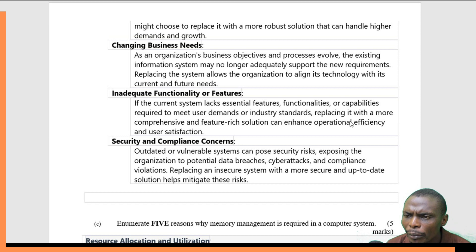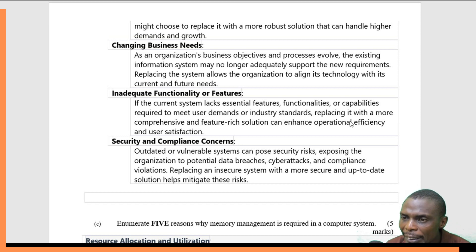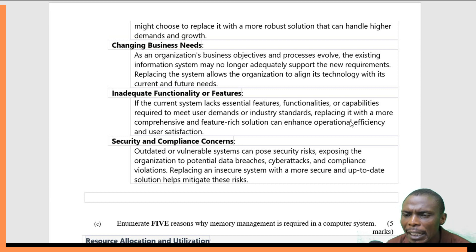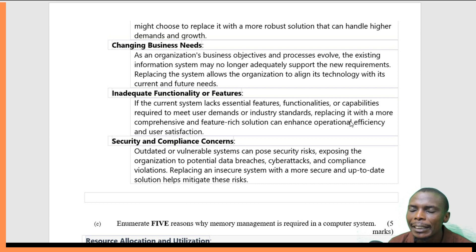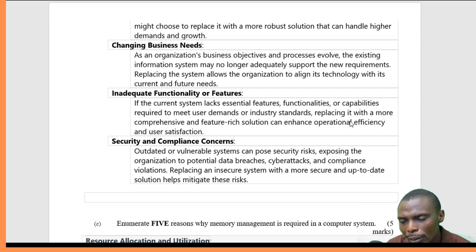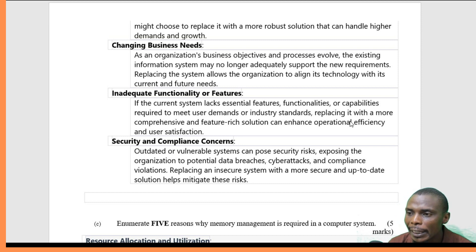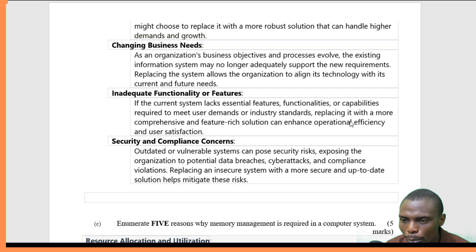The fourth reason is inadequate functionality or features. If the current system lacks some essential features or functionalities, it will not meet the requirements or objectives of the organization. In this case, the organization can consider replacing the system altogether.